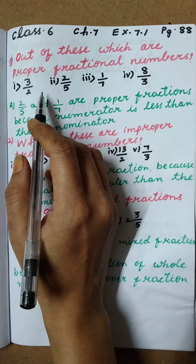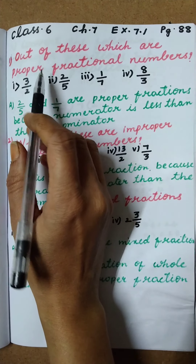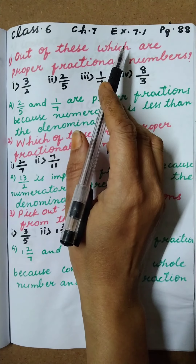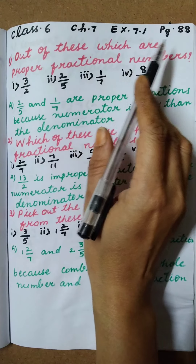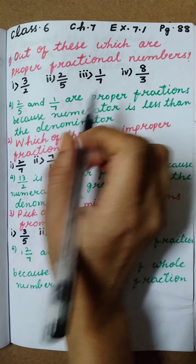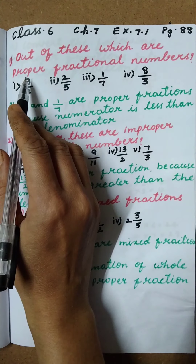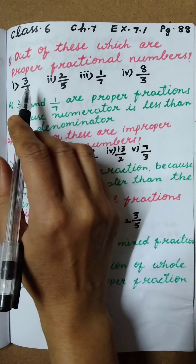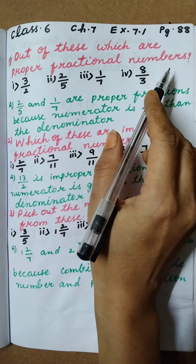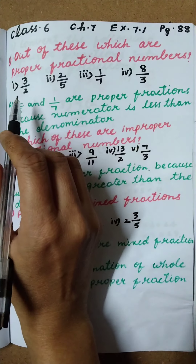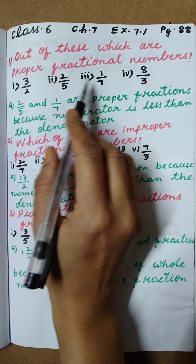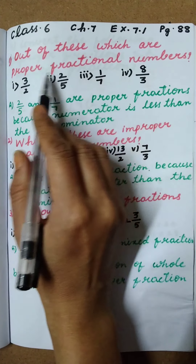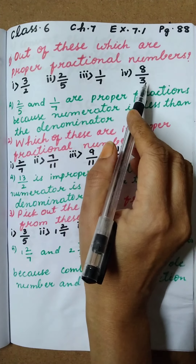Hi children, today we are discussing Classics, Chapter 7, Exercise 7.1, page number 88. Question number 1: out of these, which are proper fractional numbers? Here 4 questions are given, and in this we have to identify which are the proper fractions.